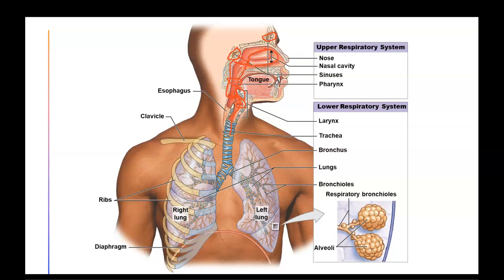This is part of the lower respiratory system. Air flows from the larynx through the glottis and into the trachea. From the trachea it divides into the right or left bronchus, leading to each lung. From there it enters smaller tubes called bronchioles, which get smaller and smaller until air reaches the air sacs known as the alveoli.